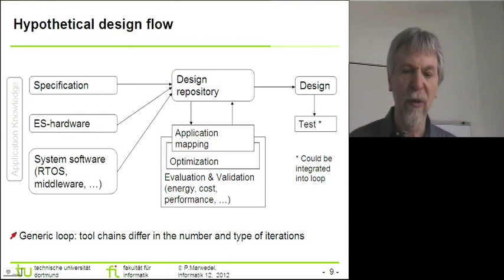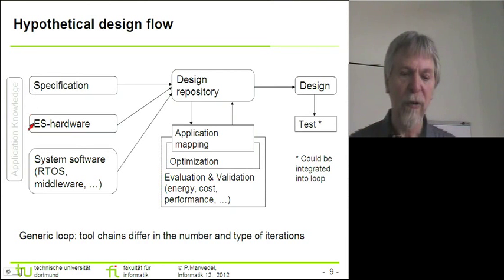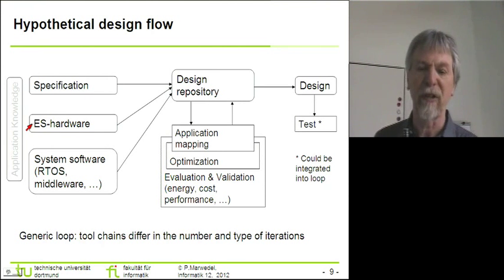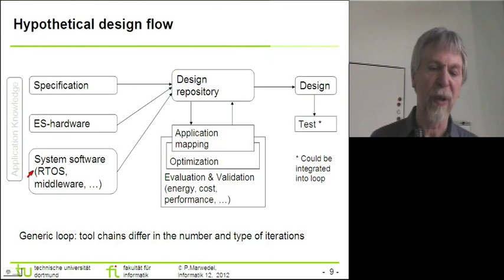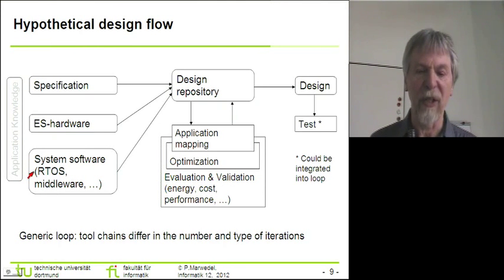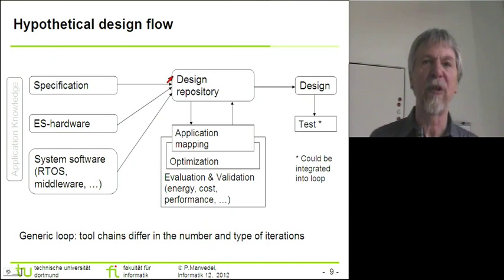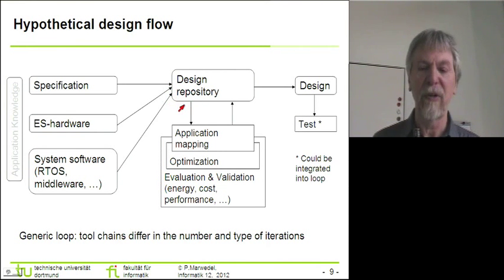In these design loops we are considering the input which is available to us. The input consists of the specification. Furthermore we assume that we are given some hardware components, so we are not starting from scratch. There are certain hardware components that are available to us, and furthermore we are given some software components — like for example real-time operating systems. These are then assumed to be stored in a so-called design repository, which is a kind of a database in which we store all these design artifacts.